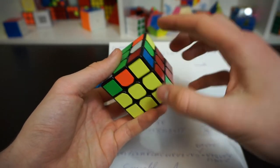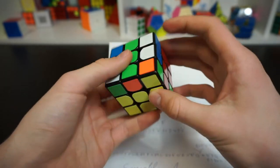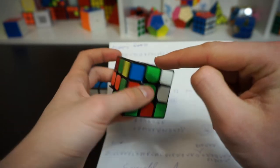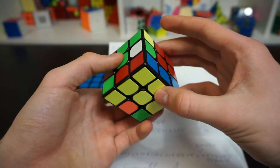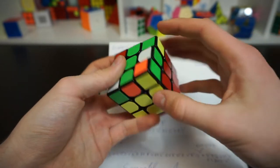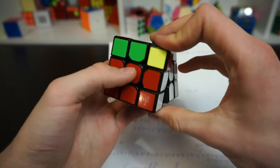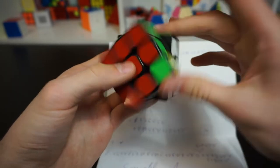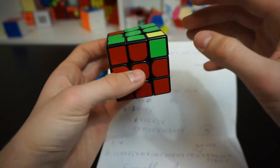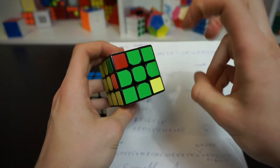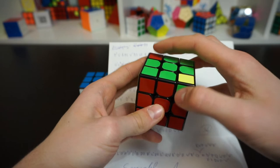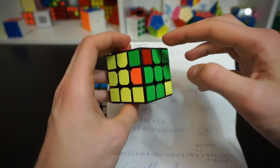I put this corner here by doing some cool corner permutation. So basically I did it like here. I brought this out of the way, brought this here and then brought that one back here. So that is how I put in the corner. Now what I did is I did an F, sexy move and F'.